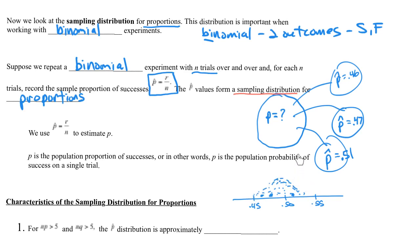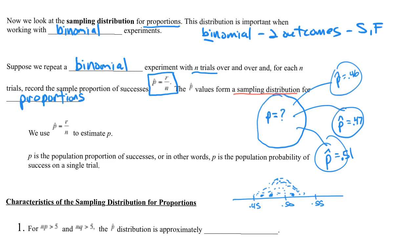Even more, the mean of this normal distribution is going to be equal to p. So if we had every conceivable sample lined up here, the mean would be exactly what p is. We're working on sampling distributions, and this time for proportions — p-hat.